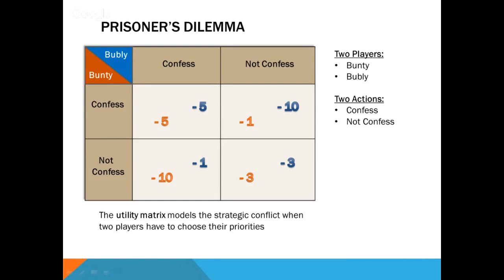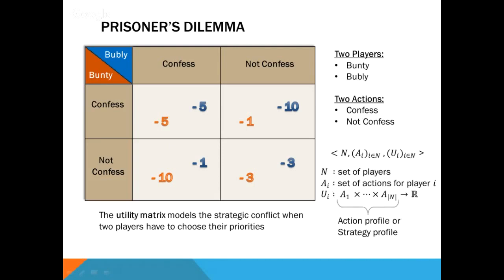We formally describe this problem using the utility matrix. Let us call the two prisoners Bunty and Bubbly. Each has two possible actions: confess or not confess. The cells represent outcomes for both players. For example, if Bunty and Bubbly both confess, cell one gives their jail times. If Bunty confesses and Bubbly does not, Bunty gets one year while Bubbly gets 10 years. In general, a game consists of a triple. So what should Bunty and Bubbly do? At first glance, not confessing seems best for both, resulting in three years each — but is it so?